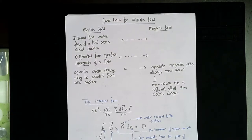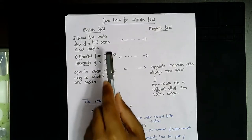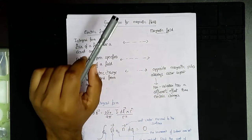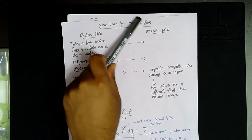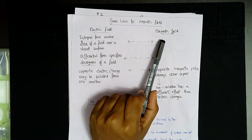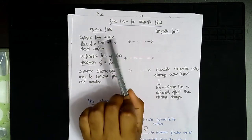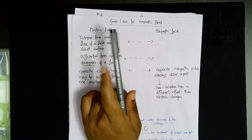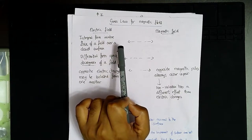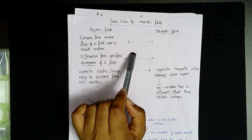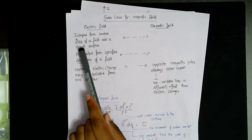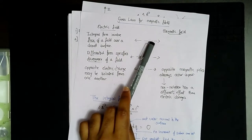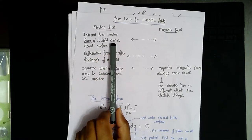Hello everyone, my name is Anthony Shivkumar, and in today's video we're going to talk about Maxwell's second equation, which is basically Gauss's law for the magnetic field. In the first equation we talked about Gauss's law for the electric field; in this case we're going to talk about the magnetic field. The integral form involves the flux of a field over a closed surface, and in the magnetic domain it also involves a flux of the magnetic field over a closed surface.